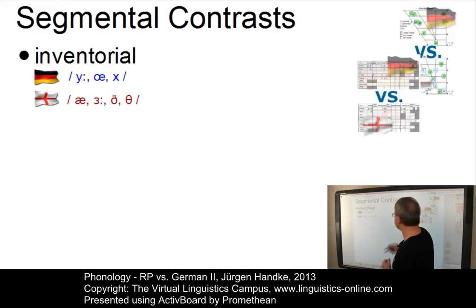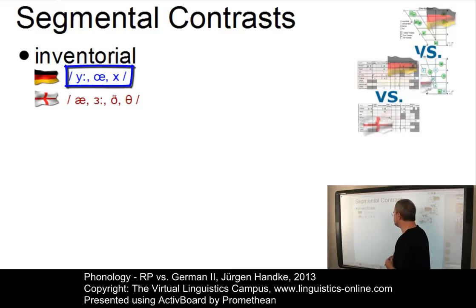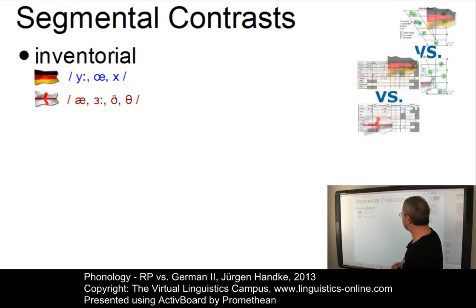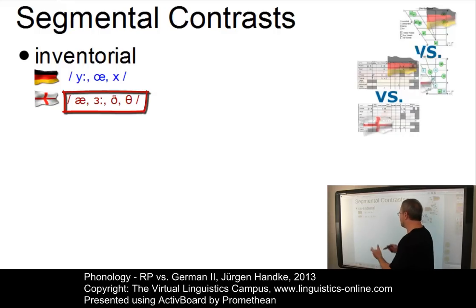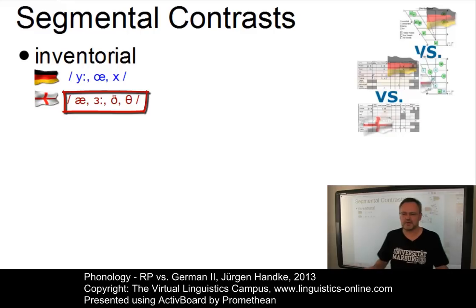As you can see here, the rounded front vowels and the CH only exist in German, whereas in RP we have phonemes such as the low front vowel A, the ash, the mid-central vowel E, and the two dental fricatives that are confined to RP.